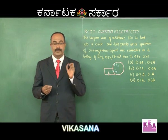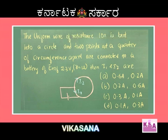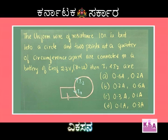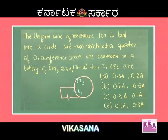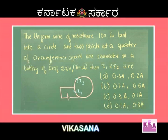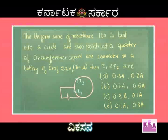Next problem: a uniform wire of resistance 10 ohm is bent into a circle, and two points at a quarter of the circumference apart are connected to a battery of EMF 2.3 volts and internal resistance 1 ohm. Find I1 and I2. Options: A) 0.6A and 0.2A, B) 0.2A and 0.6A, C) 0.3A and 0.1A, D) 0.1A and 0.3A.